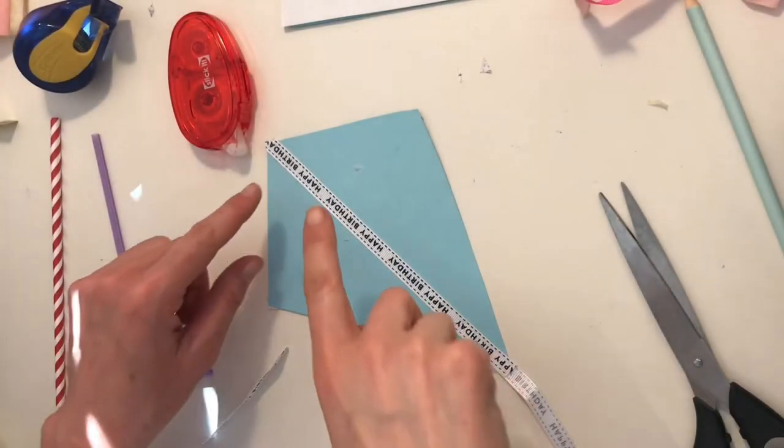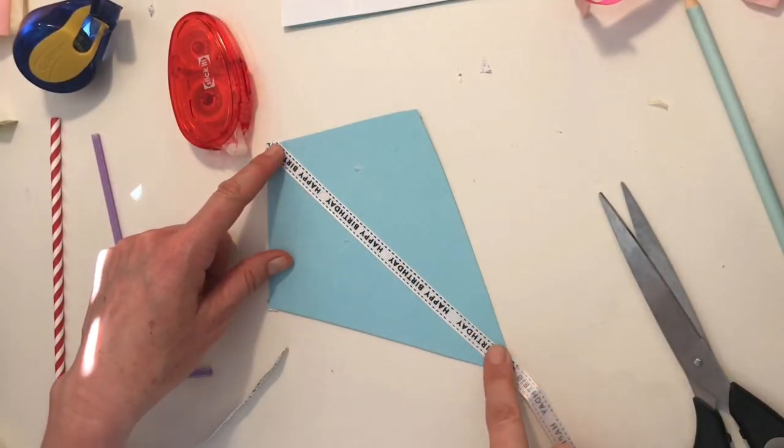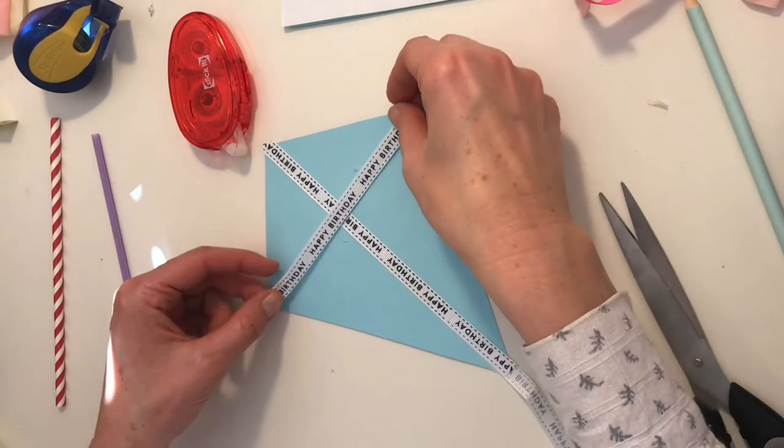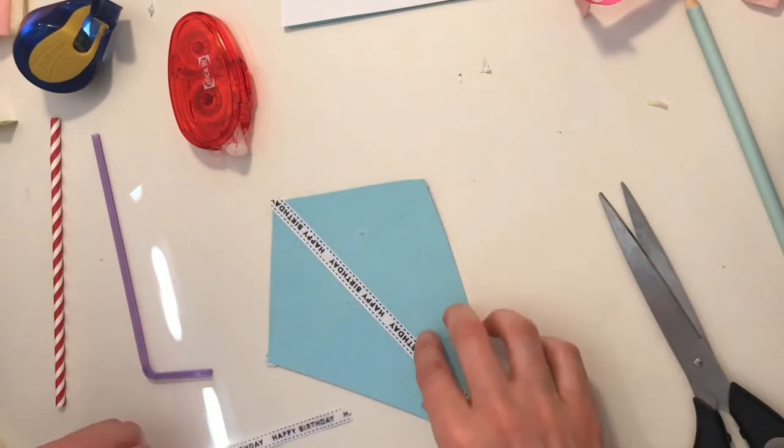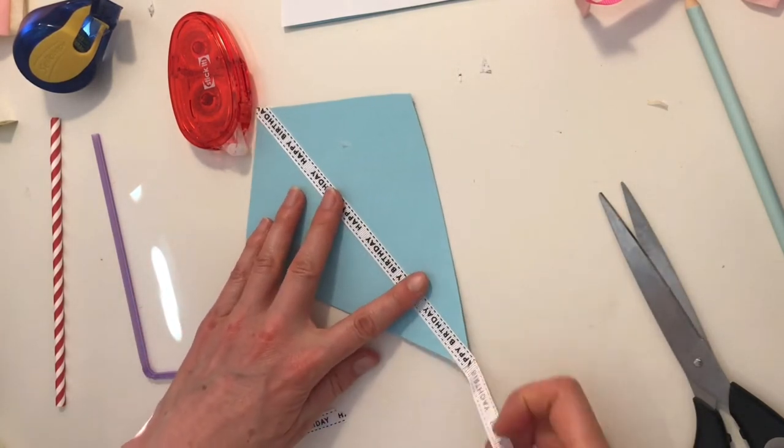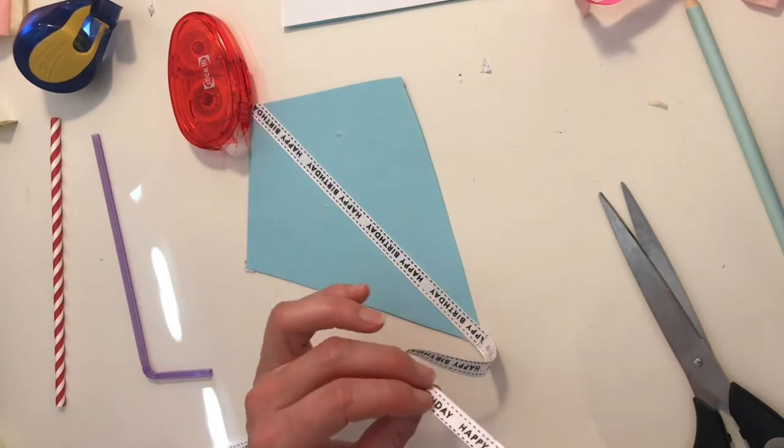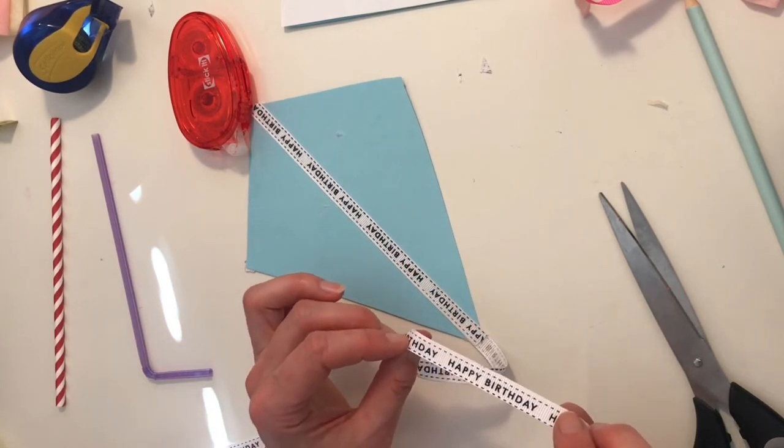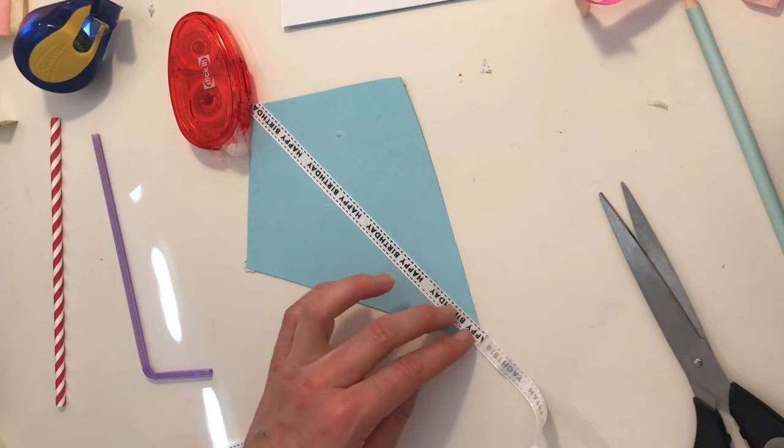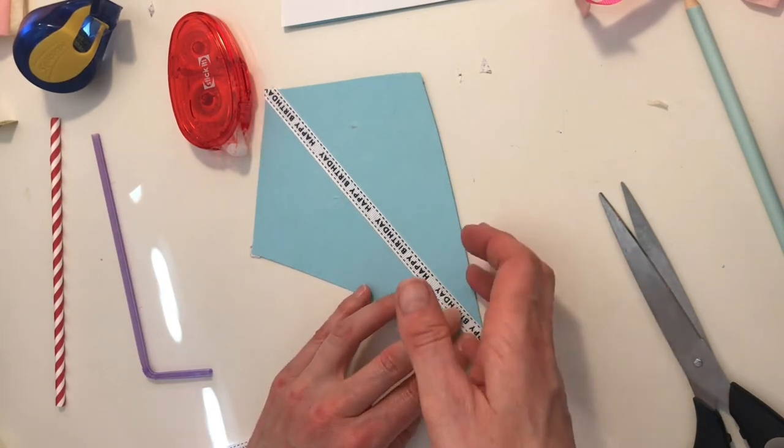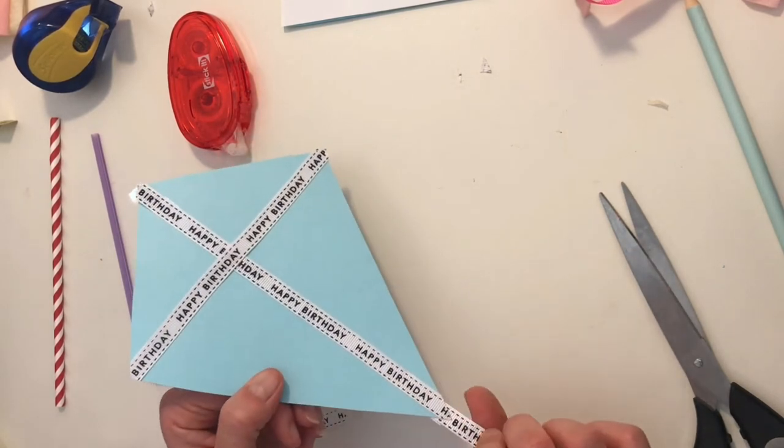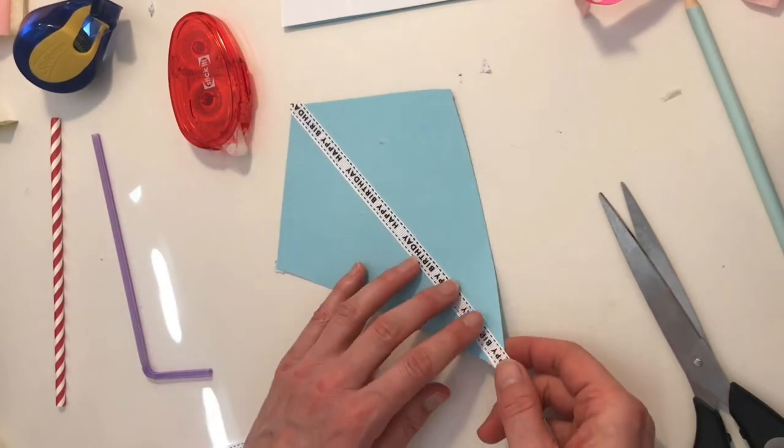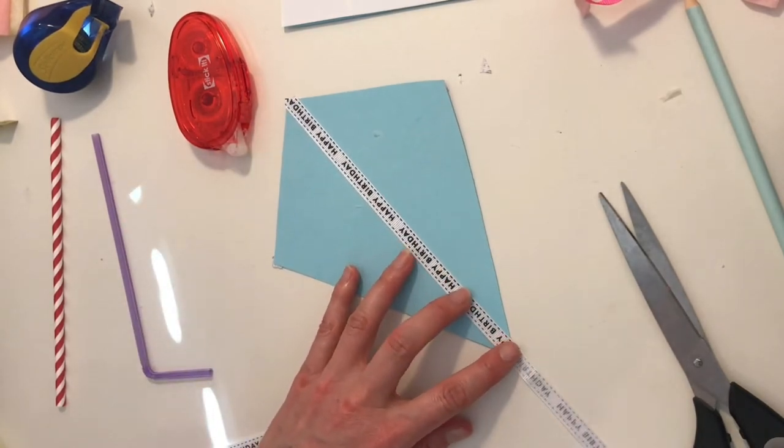So now I've cut another length here and I've cut another length for here, and I've got my tail already attached. Because my ribbon has got writing on that side, I've made sure that it's facing the front of my kite. There. If you've got normal ribbon of course it doesn't matter which way up it goes.